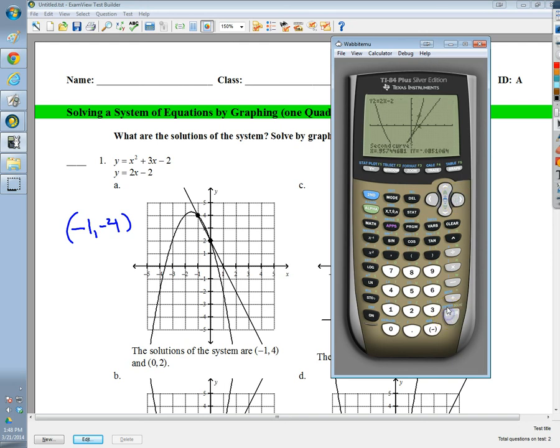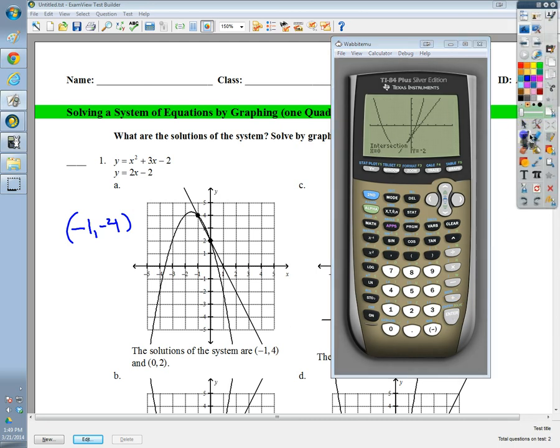Yeah, now it's on the parabola. That's good. And it's on this one. And then I know it crosses somewhere right around in here. And it says there's an intersection at zero and negative two.